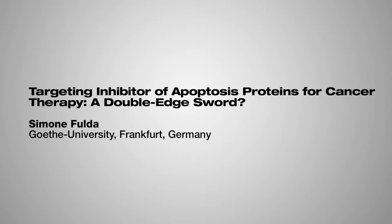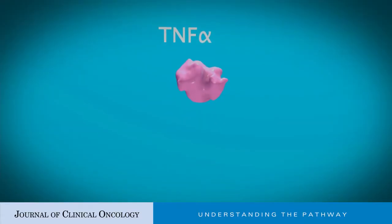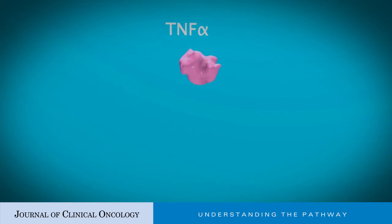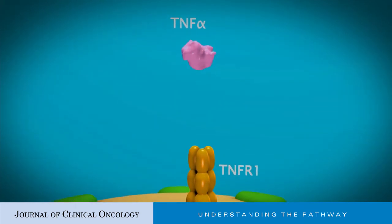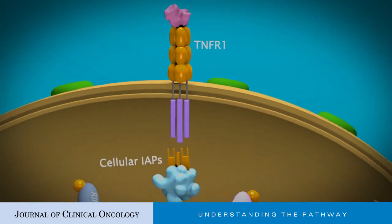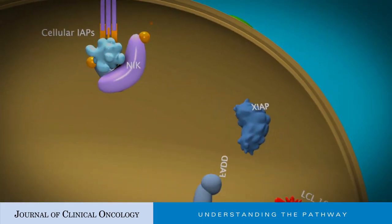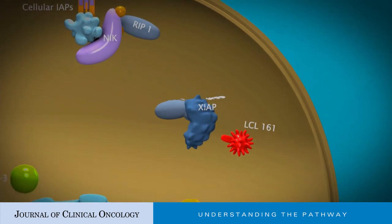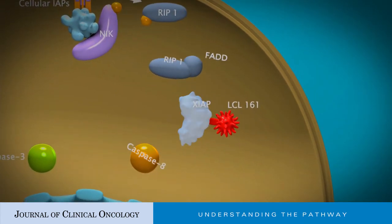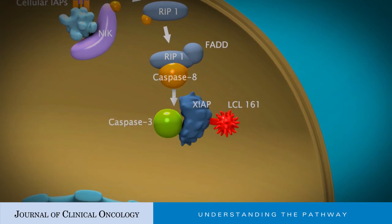Targeting Inhibitor of Apoptosis Proteins for Cancer Therapy: a double-edged sword. LCL-161 antagonizes X-chromosome-linked inhibitor of apoptosis, thereby promoting caspase activation and apoptosis.